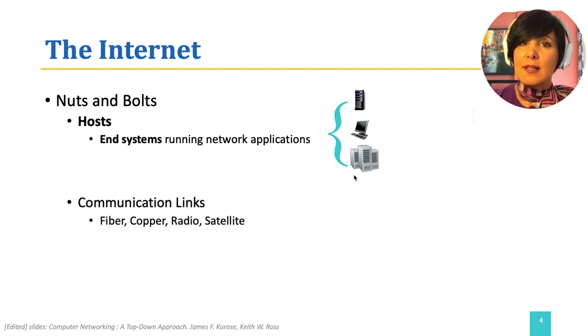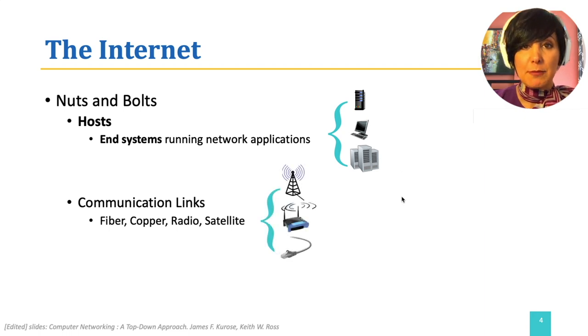These end systems are connected to each other through communication links. Communication links can use different types of media, for example, fiber, copper, or wireless links, using radio spectrum. Different links have different rates of transmission. We will discuss a few examples of communication links later.